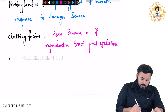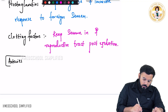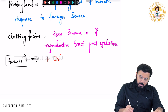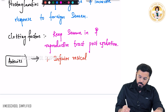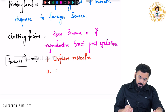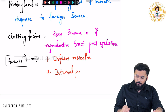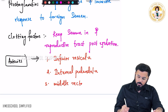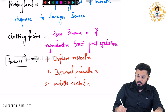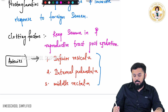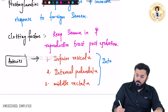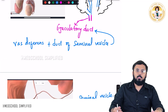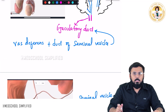The blood supply to the seminal vesicles comes from three important arteries: the inferior vesical artery, the internal pudendal artery, and the middle rectal artery. All three are branches of the internal iliac artery. These are the key points about the seminal vesicles. Thank you so much for watching. Goodbye.